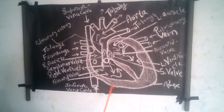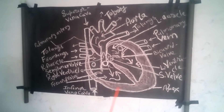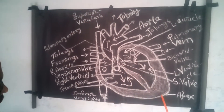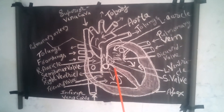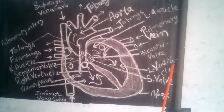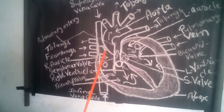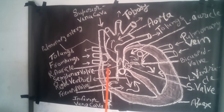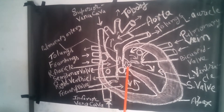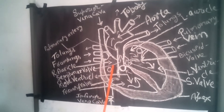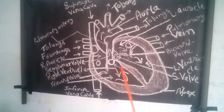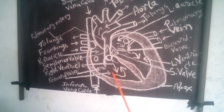This is the internal structure of the human heart. You see the half part — this half part is the right side of the human heart and this half part is called the left side of the human heart. There are four chambers in the human heart. The two upper chambers are called auricles and the two lower chambers are called ventricles.